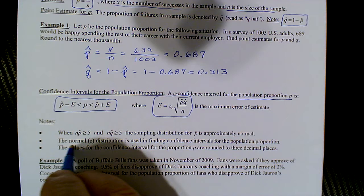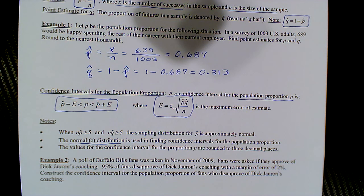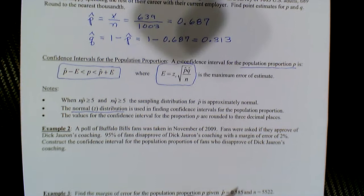We're going to use the normal or z-distribution for finding the confidence interval, and typically we round to three decimal places — but be careful and read the directions in MyMathLab.